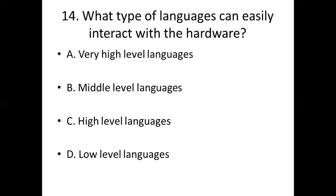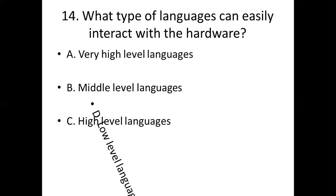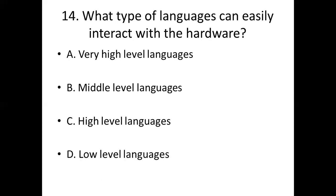Fourteenth bit. What type of languages can easily interact with the hardware? Option A, very high level languages. Option B, middle level languages. Option C, high level languages. Option D, low level languages. Answer: Option D, low level languages.